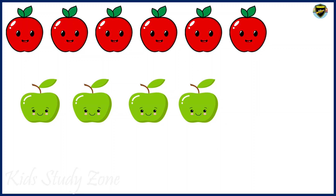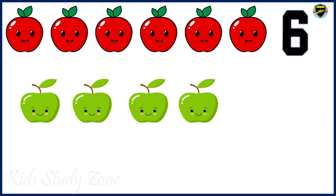So children, as you can see we have some red apples and we have some green apples. We need to find the total apples. So we will start counting red apples: 1, 2, 3, 4, 5, 6. We have 6 red apples. Now we will count green apples: 1, 2, 3, 4. We have 4 green apples. Now you all know the sign of addition is plus sign.